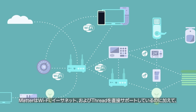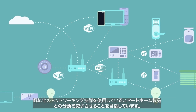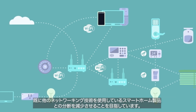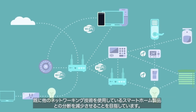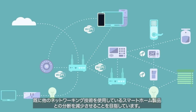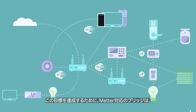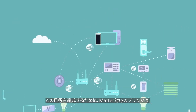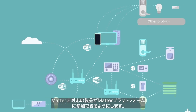Though Matter natively supports Wi-Fi, Ethernet, and Thread, its goal is to reduce fragmentation in smart homes that may already have devices using other networking technologies. To accomplish this, Matter-compliant bridges allow non-Matter devices to participate in a Matter ecosystem.